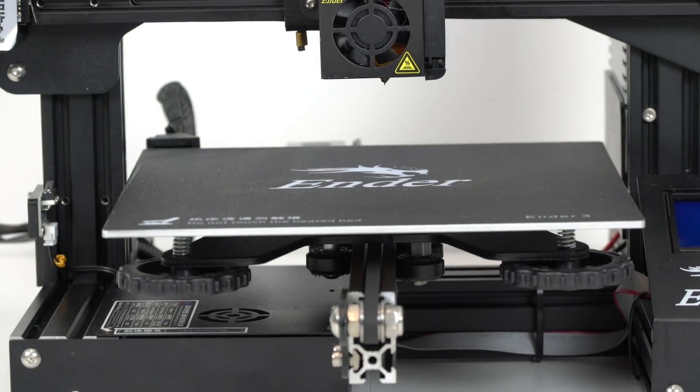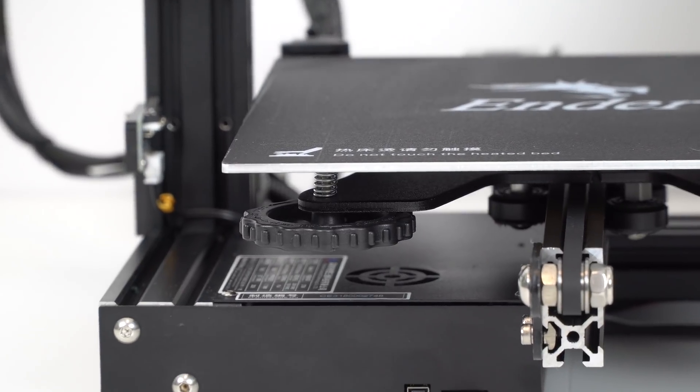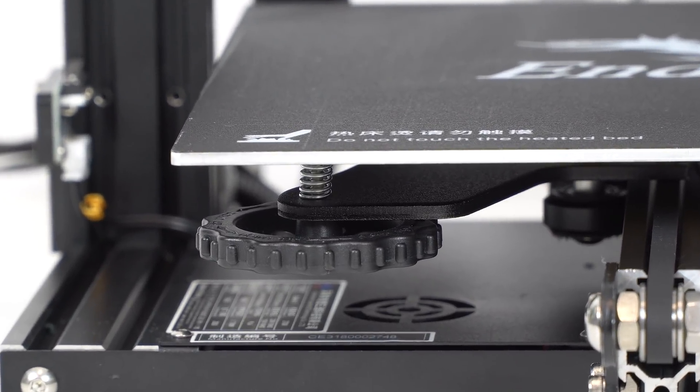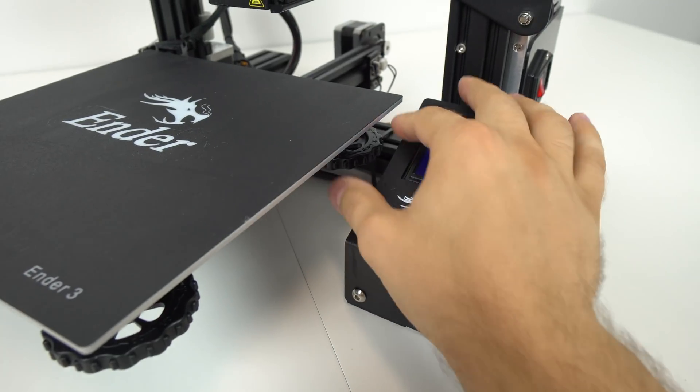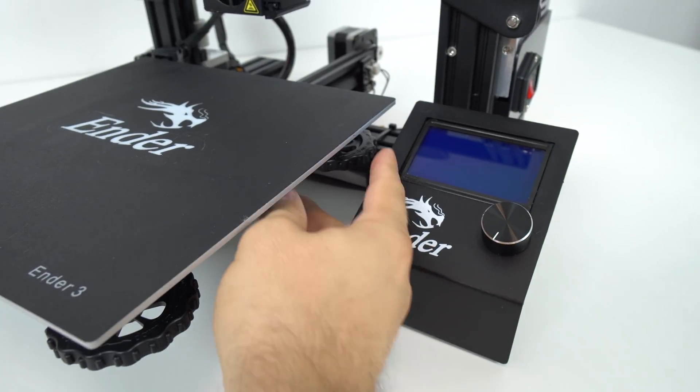For level adjusting, Ender 3 is using these new, oversized level wheels which I do like as it's much easier to reach them and do the fine adjustment. Only the right back one is still a bit hard to reach, as the LCD display is standing in the way.